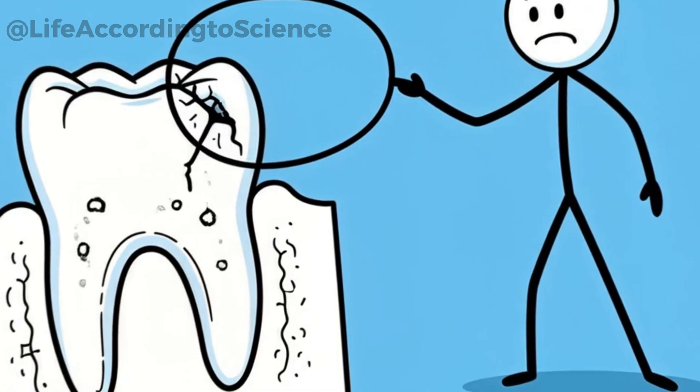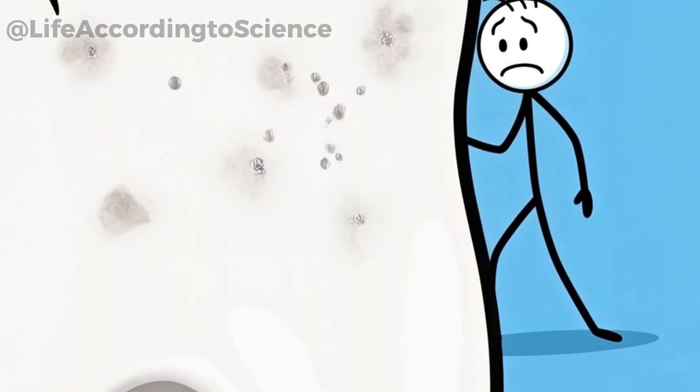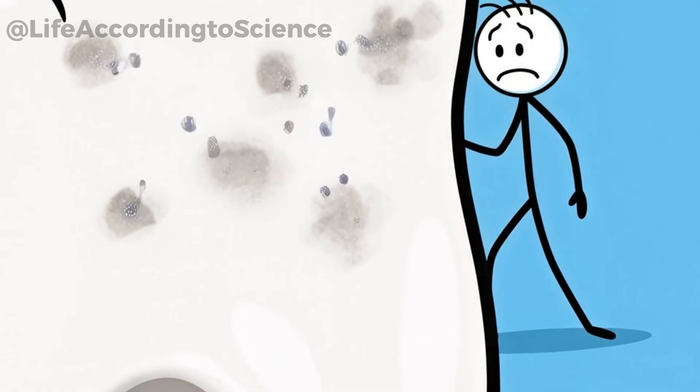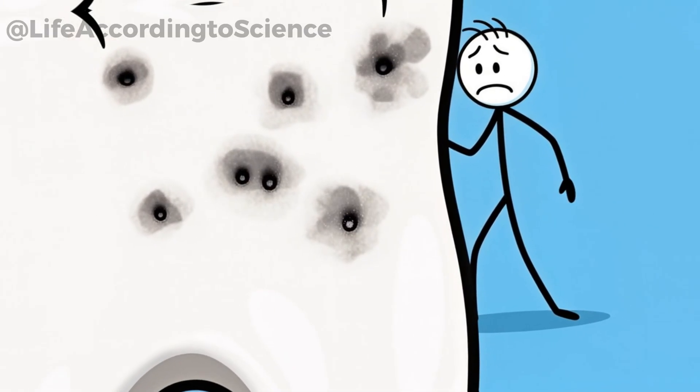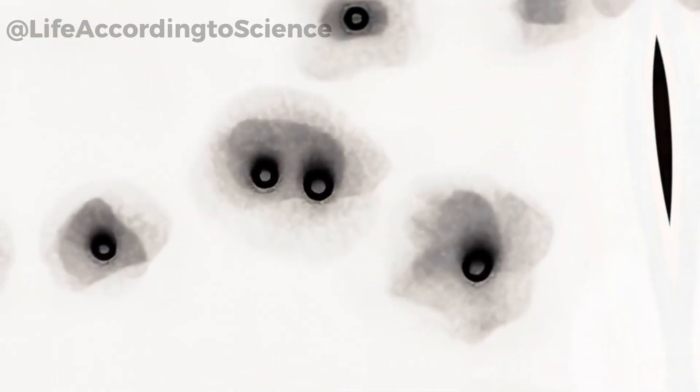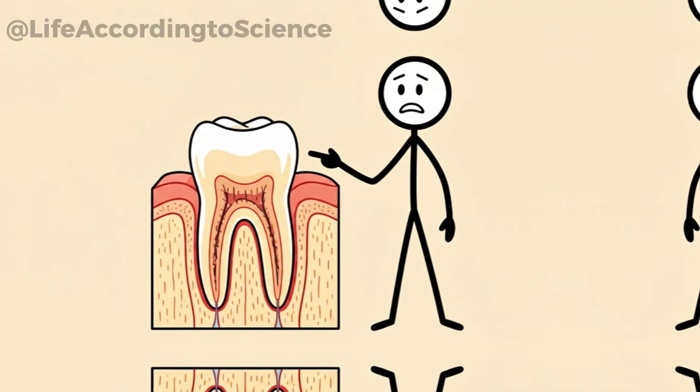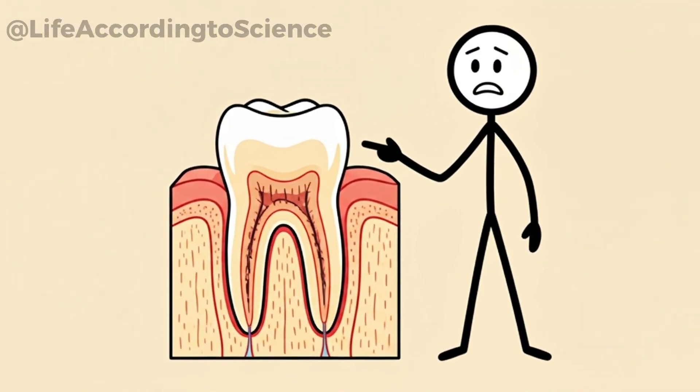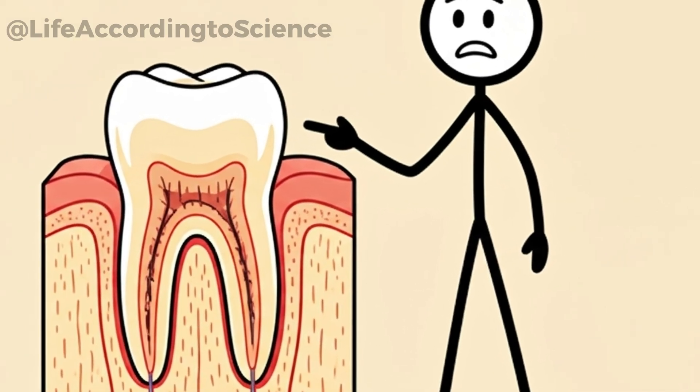Without brushing, enamel, the strongest substance in your body, begins to lose its battle. Bacteria produce acids that slowly dissolve it, creating microscopic holes that deepen over time. At first, cavities don't hurt. That's the dangerous part. While you feel fine, decay is tunneling deeper into the tooth, reaching the dentin, which is softer and more vulnerable.